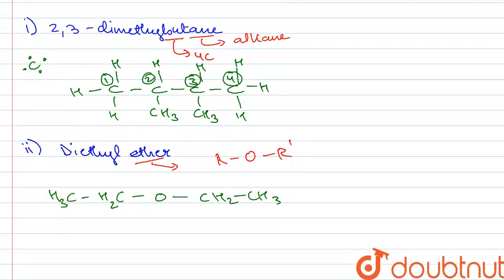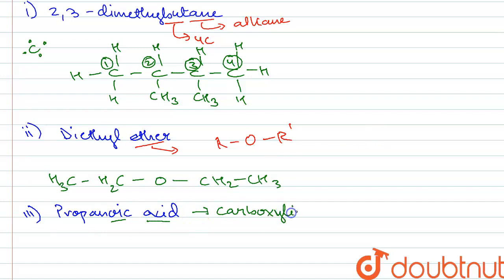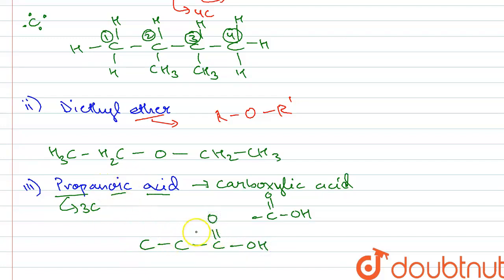The third structure is propanoic acid. From the suffix we can see it is a carboxylic acid, so the functional group is C double bond O with an OH group. The root 'prop' means it contains three carbon atoms, including the carbon of the carboxylic acid group. The structure has carbons numbered one, two, and three, with carbon one attached to the COOH functional group, and the remaining carbons fulfilled by hydrogen atoms.